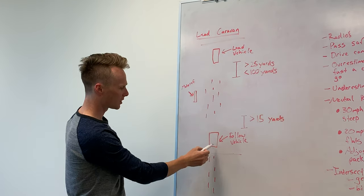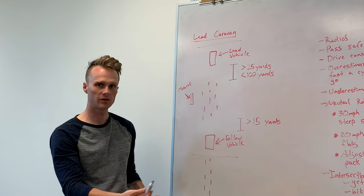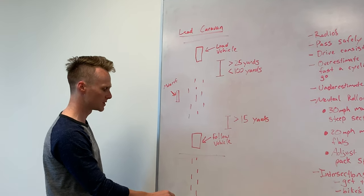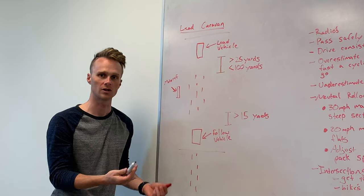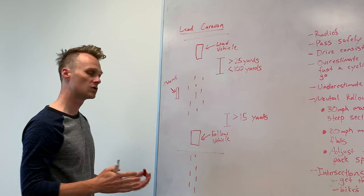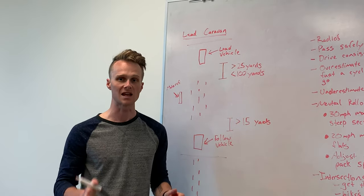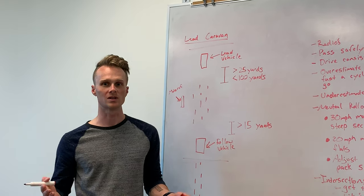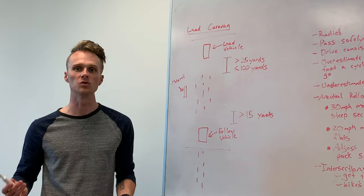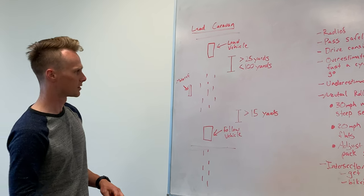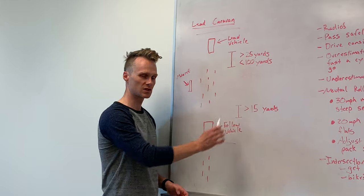And if you are too far back, say 50 yards, you're essentially opening the caravan up to being passed by motorists who are in a hurry to get by. We want to really force the motorists to only pass when it's absolutely safe. Otherwise, we risk people making quick moves and not knowing what's going on. So around 15 to 20 yards is that sweet spot there.